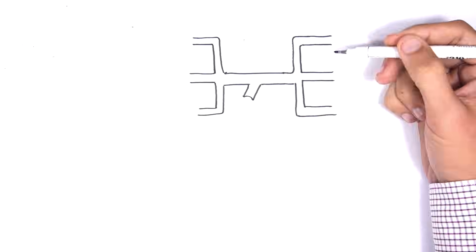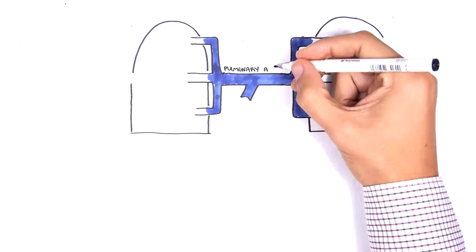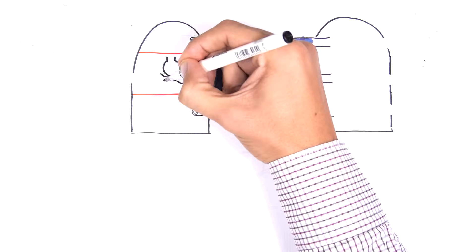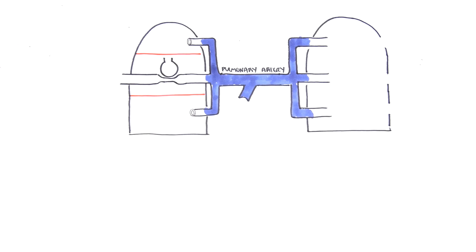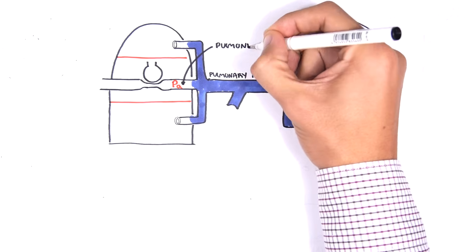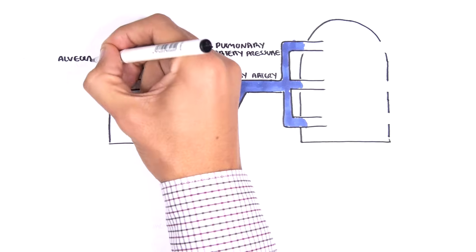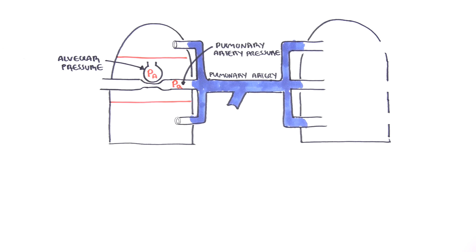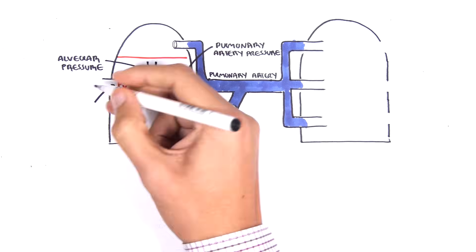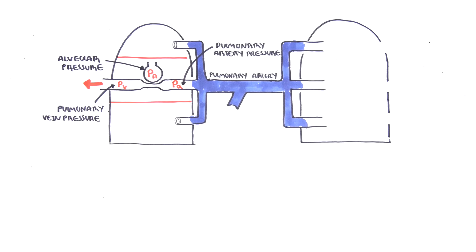If the concept of different ventilation and perfusion is still confusing, let's introduce pressures. You have two lungs, each divided into three zones. The pulmonary artery brings blood to the lungs — pulmonary artery pressure is represented as p(a) and brings blood to the alveoli. The alveoli have their own pressure, represented as p(A). Gas exchange occurs between the pulmonary vessels and the alveoli. Then the pulmonary vein returns this newly oxygenated blood to the heart, with pulmonary vein pressure represented as p(v).